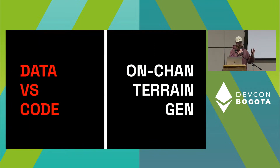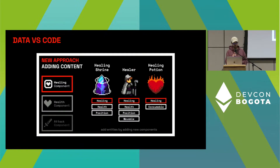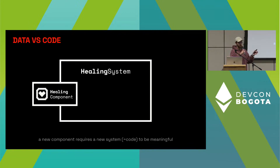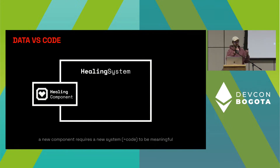Now I want to talk about two things I found interesting when building OPCraft. The first one is data versus code, and the second one is on-chain terrain generation. For data versus code: when you want to add new content, you can modify component values or add new components. But every time you add a new component, you also have to add a new system because otherwise there's no logic that handles it. Adding a new system is basically adding new physics to this world, whereas recombining components you already have is just adding new content. You want to optimize for adding content because it's easier than deploying a new system that could have bugs.